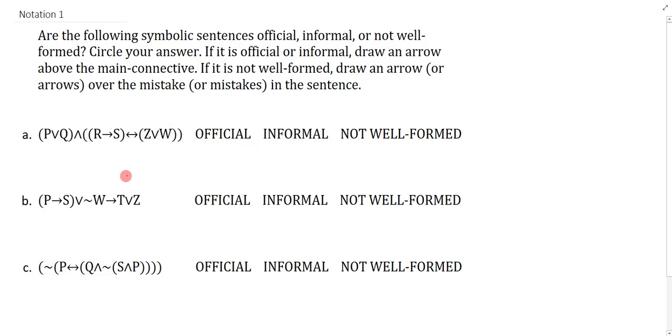So right now it seems like it's official or informal. So what we want to do to check between official and informal is we need the exact same number of sets of brackets as there are binary connectives. So there's one binary connective, another two, three, four, five binary connectives.